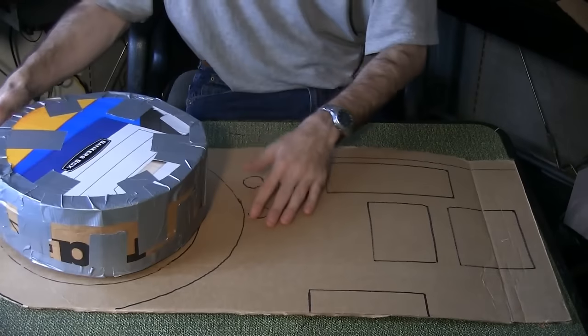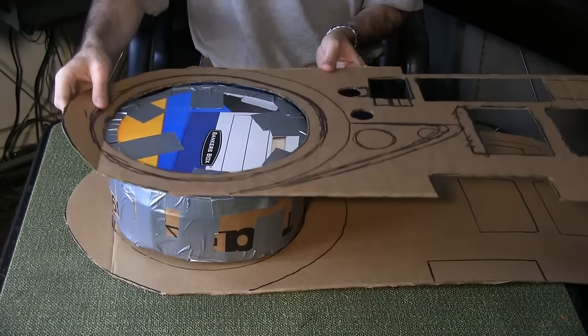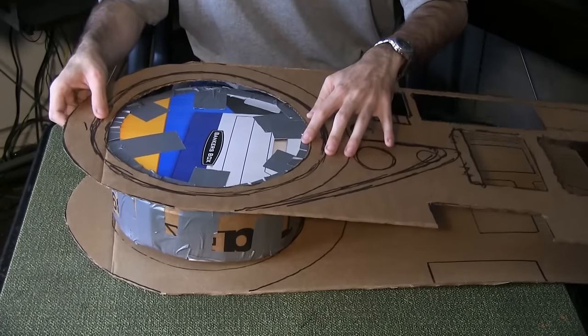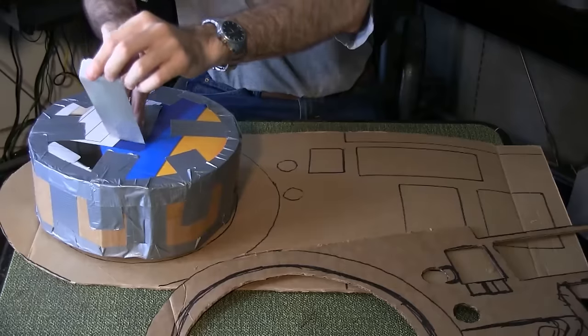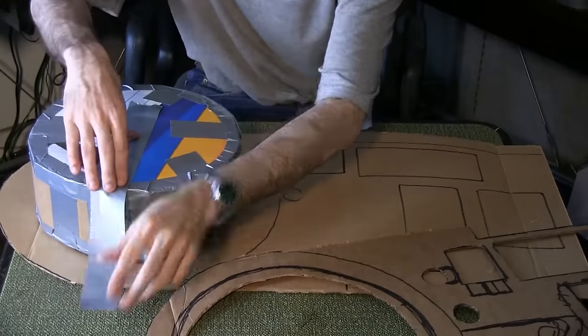Place the circle piece on its designated spot and place the main template over it. If it doesn't fit, you'll need to modify the template piece until it does. Once you know it fits, duct tape the circle piece in place on the new template.